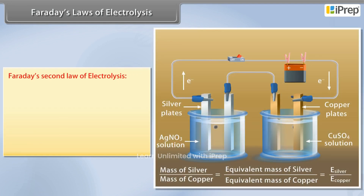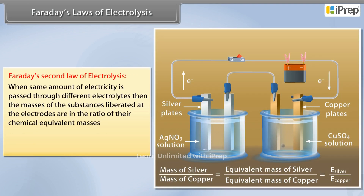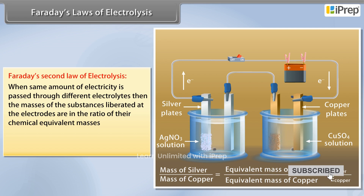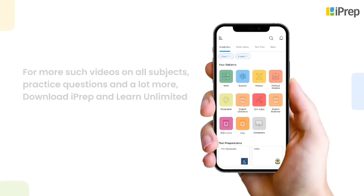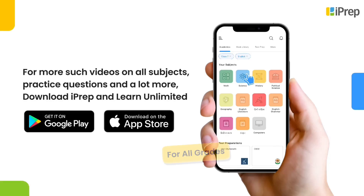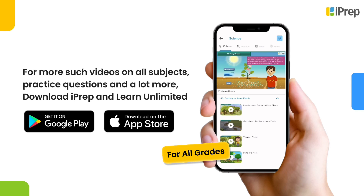Faraday's Second Law of Electrolysis: when the same amount of electricity is passed through different electrolytes, the masses of the substance liberated at the electrodes are in the ratio of their chemical equivalent masses.